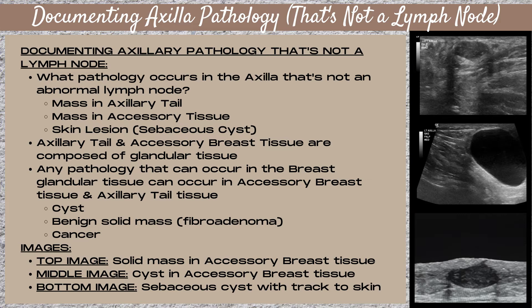In the middle image, this is a cyst within accessory breast tissue. Because the cyst is so large, it's hard to appreciate the accessory tissue in this image, but the white glandular accessory tissue is superficial on the image right underneath the skin line and contains a thin rim of that tissue around that cyst. The bottom image is a sebaceous cyst, which is a skin lesion with its hallmark feature — a track to the skin.